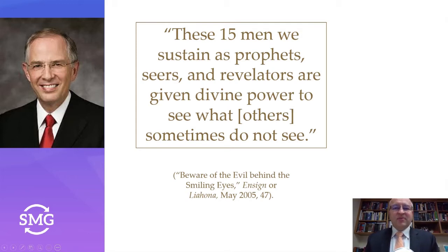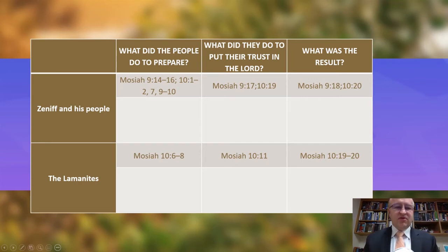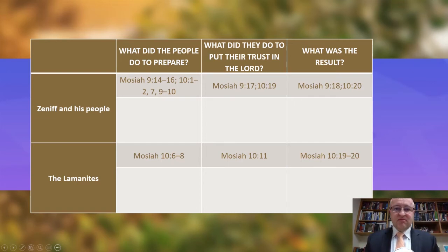In these chapters, it's good to make a comparison between two different types of people — their preparation and what they do or don't do that affects the end result. Zenith and his people are one group, and the Lamanites are another. Each are going to prepare. One will put their trust in the Lord; one will not. They will have very different results. Let's search and discover what the difference is in their preparation and in their putting trust in the Lord, and how the outcome is different.